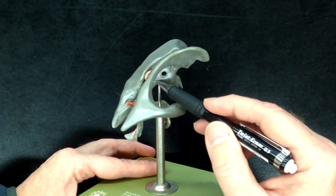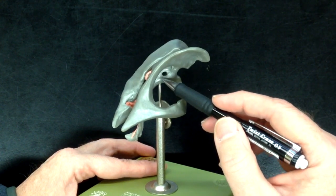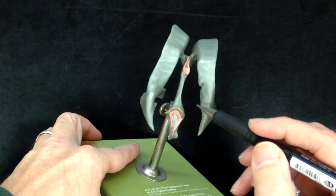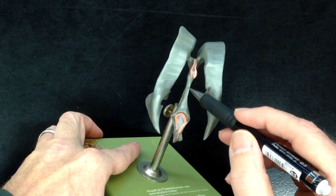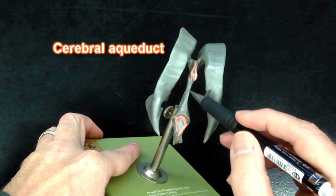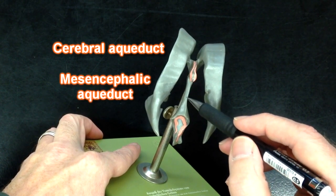Then cerebrospinal fluid flows from the third ventricle to the fourth ventricle through this structure right here, which would be the cerebral aqueduct. It's also known as the mesencephalic aqueduct.